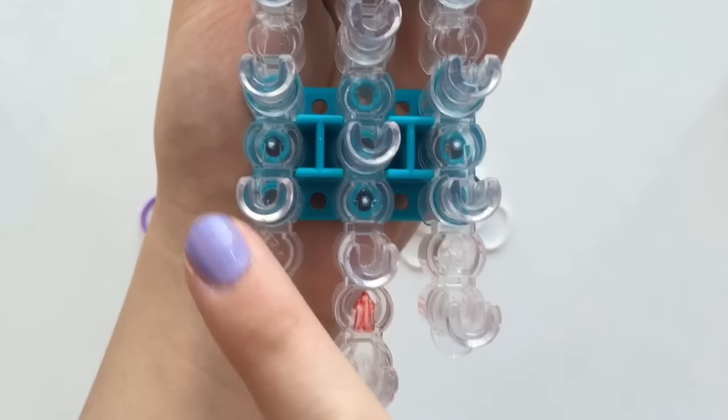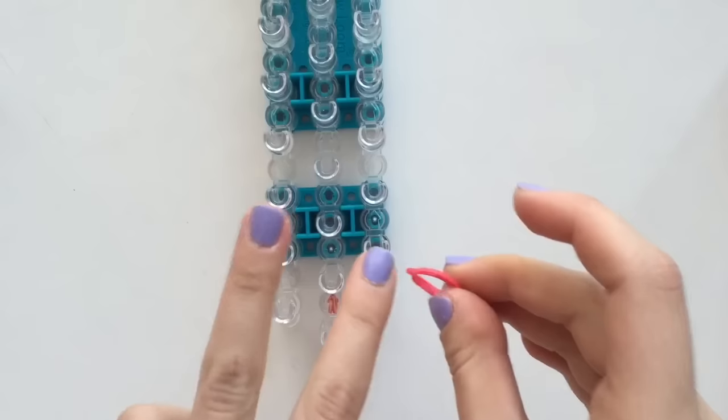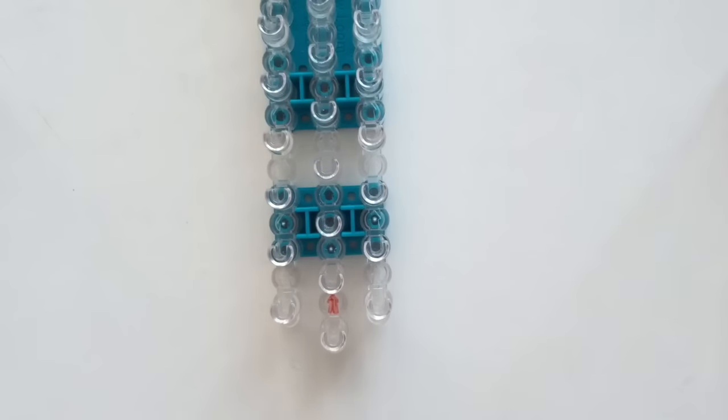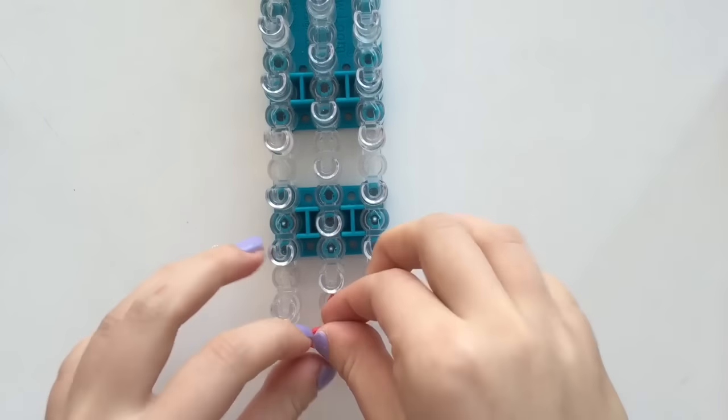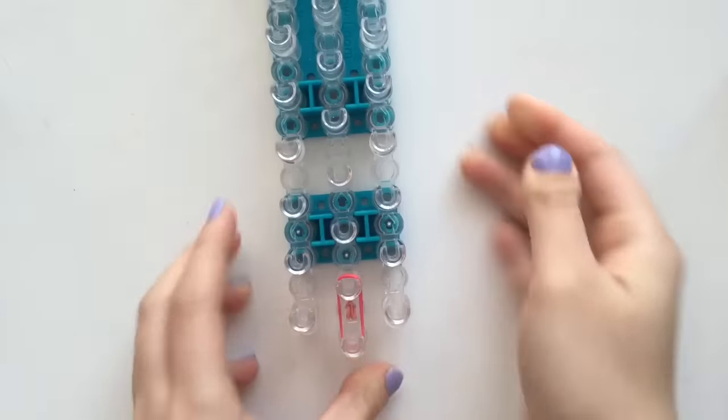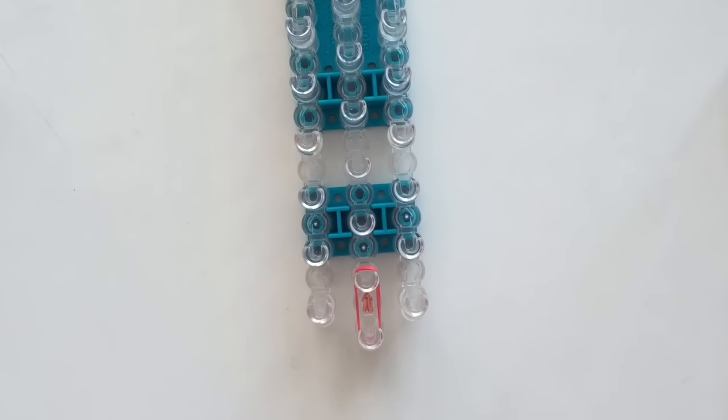Also you'll need to have your loom in this configuration. Now begin by taking two red rubber bands for the cherry. And I'm going to be placing them from the first to second middle pegs, just like that.